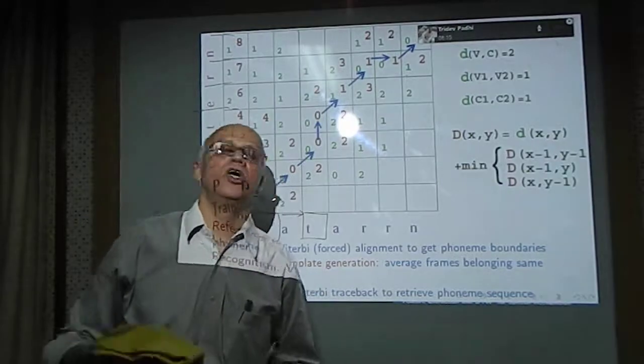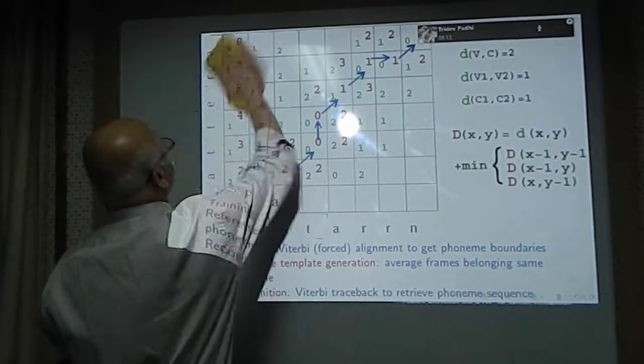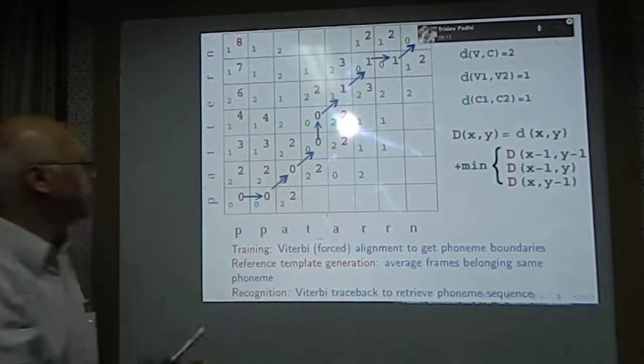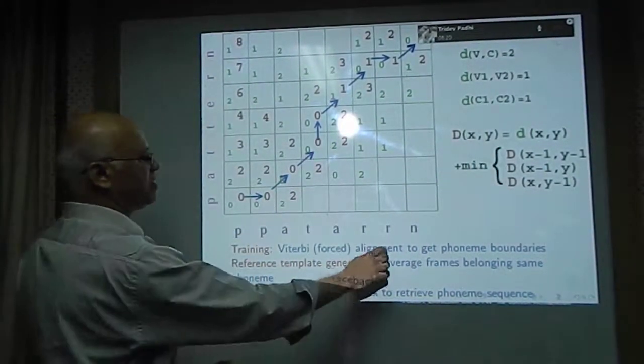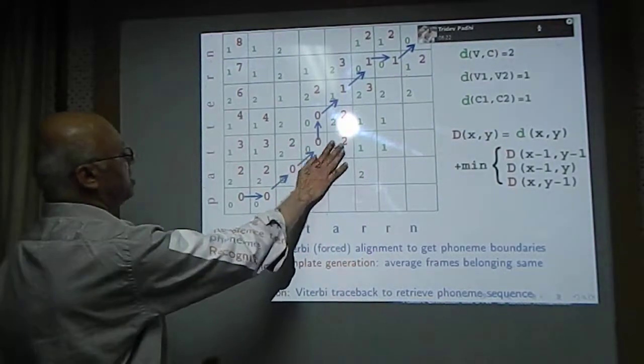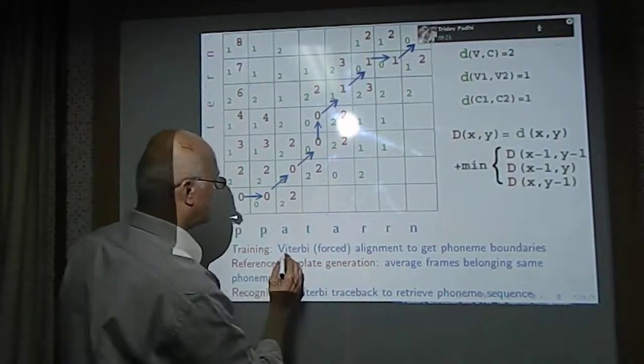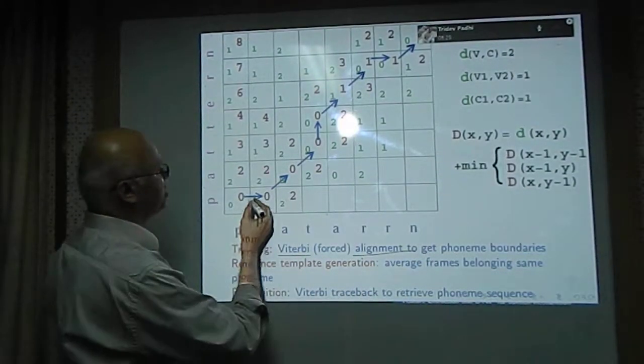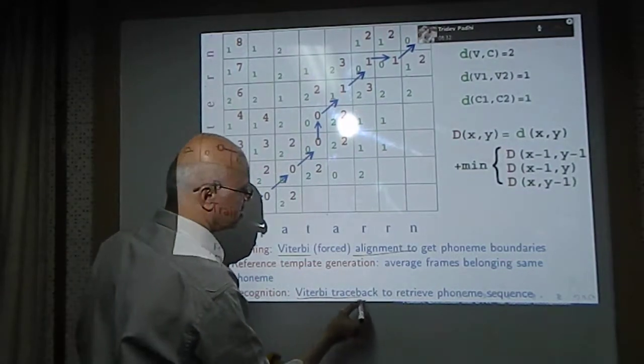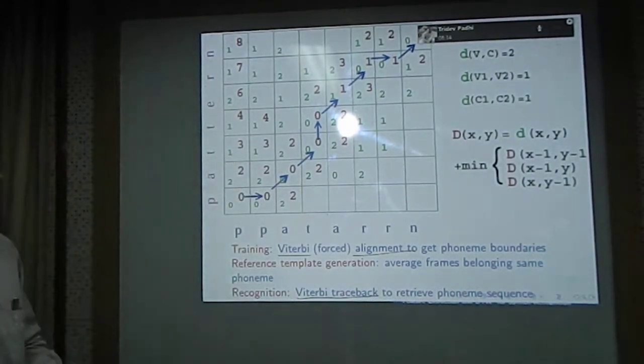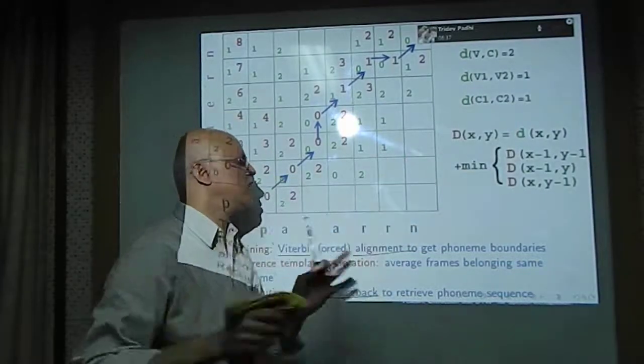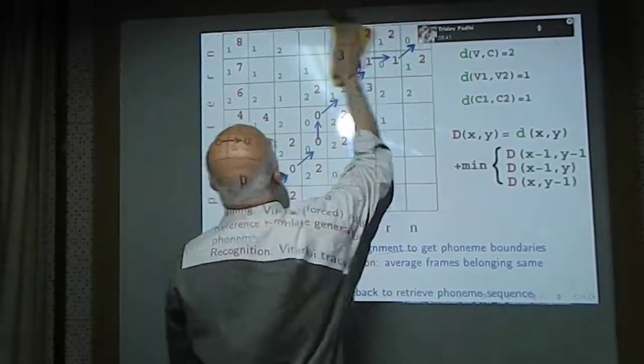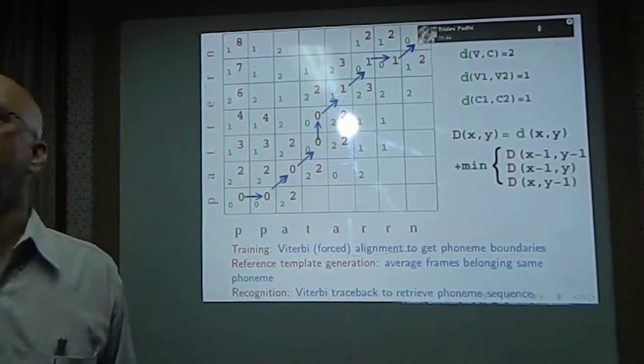We can use this to generate the composite reference template, and this is the same technique used to train Hidden Markov Models. When this dynamic programming technique is used in Hidden Markov Model, we call that alignment Viterbi alignment, and the traceback, that is the blue curve path, is called Viterbi traceback.